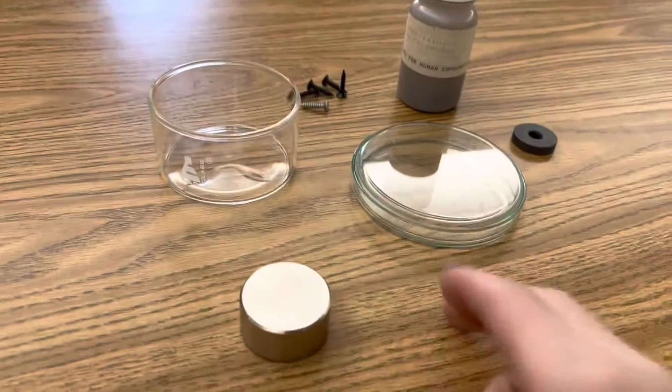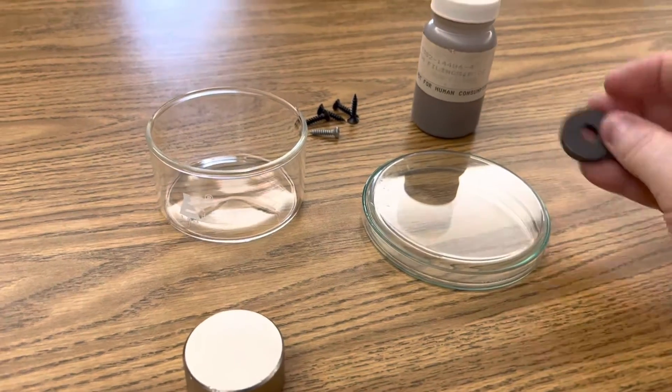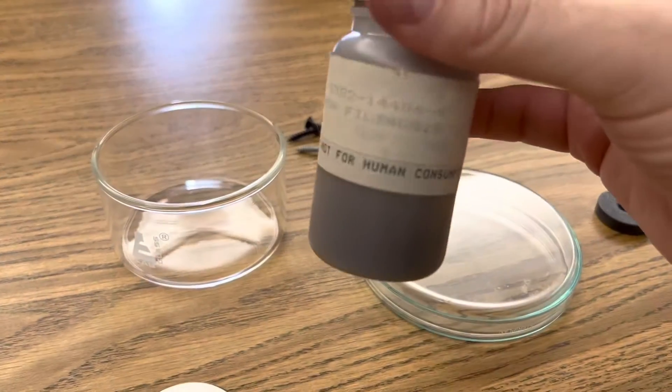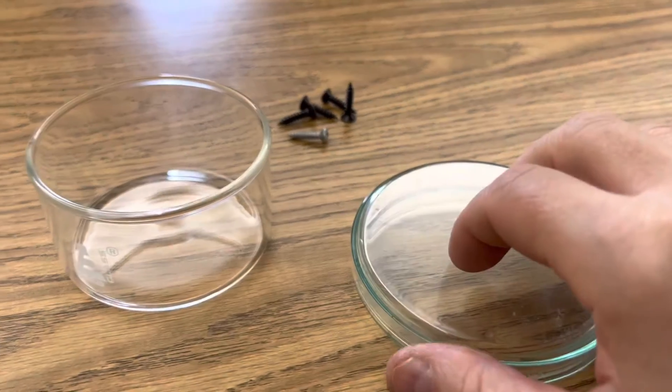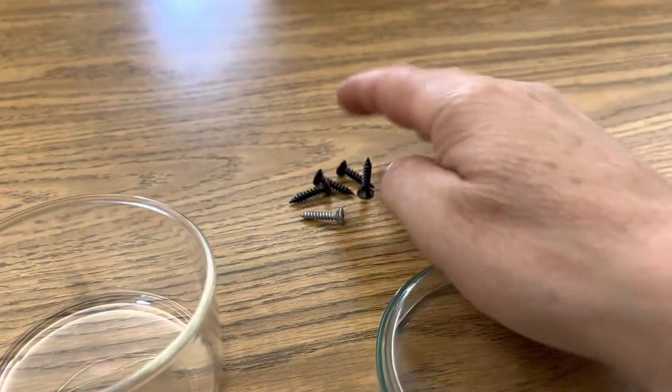All I'm using in this demonstration is an N52 neodymium magnet, a round magnet, some iron filings, a petri dish, a crystallization dish, and some screws.